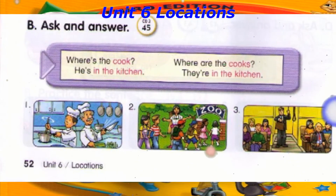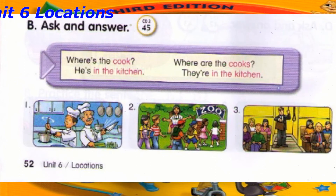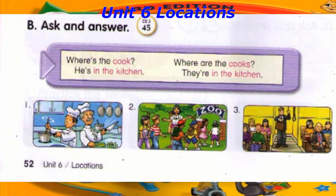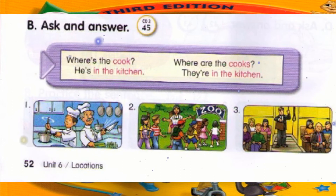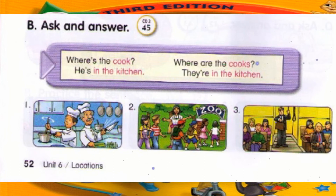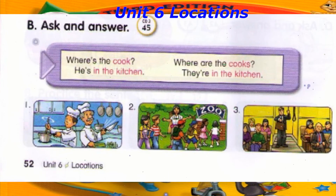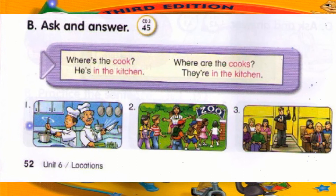Track 45. B. Ask and answer. Where's the cook? He's in the kitchen. Where are the cooks? They're in the kitchen. Number 1: Where are the cooks? They're in the kitchen. Number 2: Where's the teacher? She's at the zoo. Number 3: Where are the office workers? They're on the train.